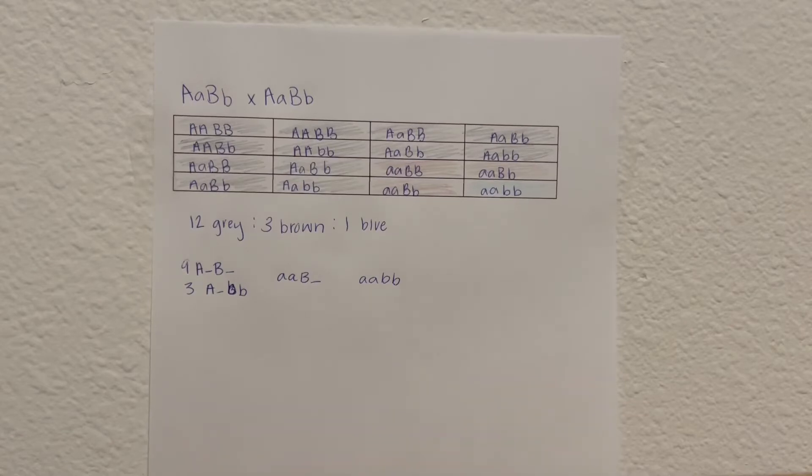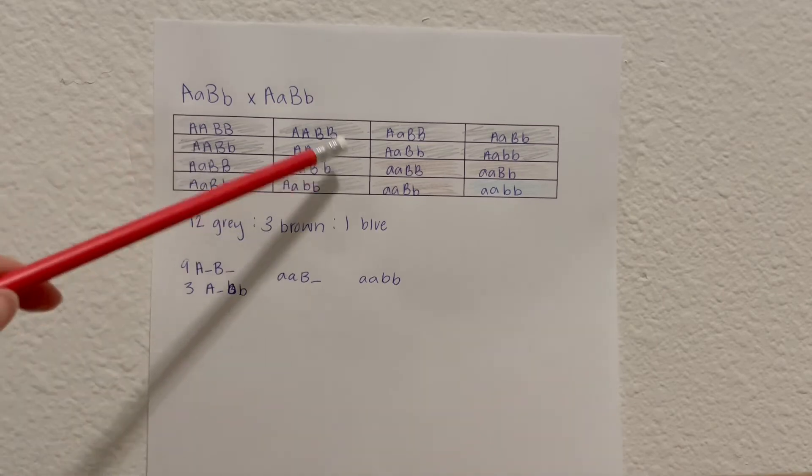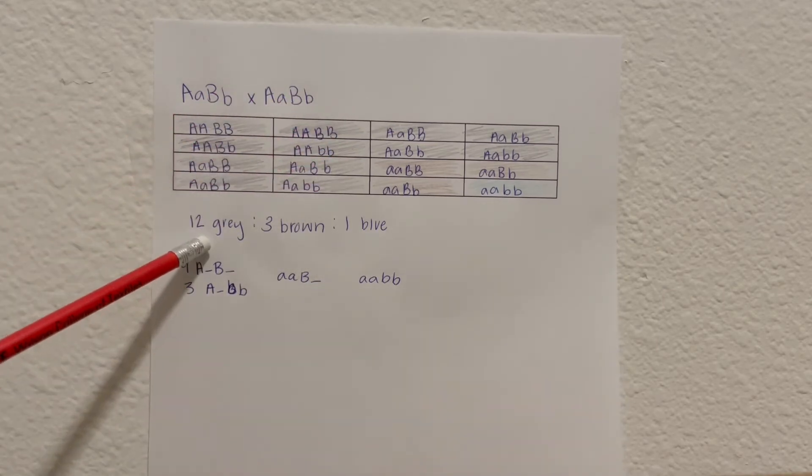So here we have a heterozygous cross for single dominant epistasis. As you can see here, all of the genotypes with a capital A allele are the gray color found in sharks.